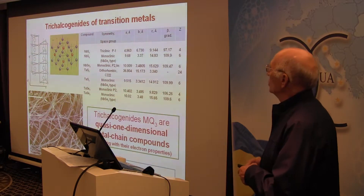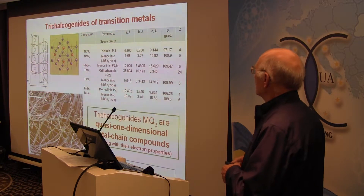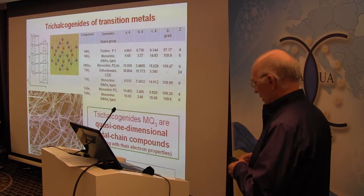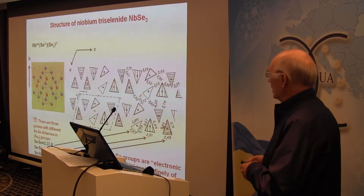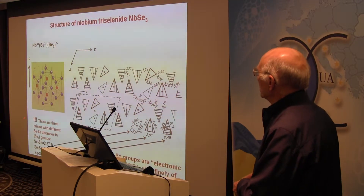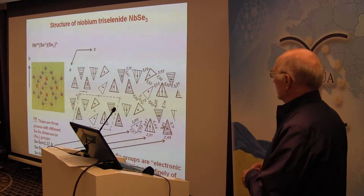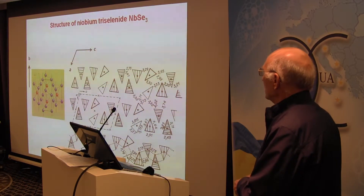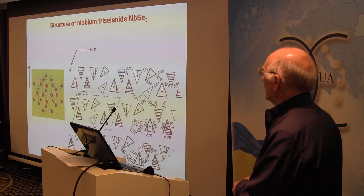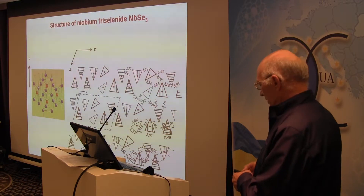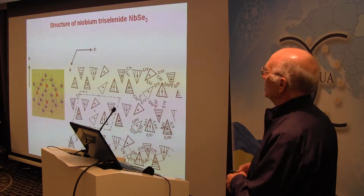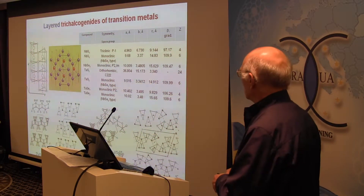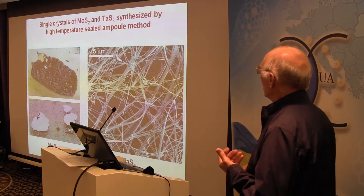Recent studies were devoted to trichalcogenides of transition metals. Trichalcogenides are usually described as one-dimensional materials, because in these materials we can see chains in the B direction. But we can also see rather strong bonds between the one-dimensional chains — between metal and chalcogenide atoms — which allows us to also describe this material as two-dimensional. We try to use these materials for exfoliation using our method.